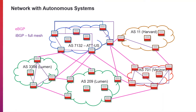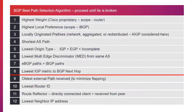What's the best path to get to a particular route? There's a decision tree that routers use to decide which path is the best path among all the paths they've learned. The first thing a router looks at is the highest weight. This is a Cisco proprietary attribute — it's only in Cisco routers — and its scope is the router itself.